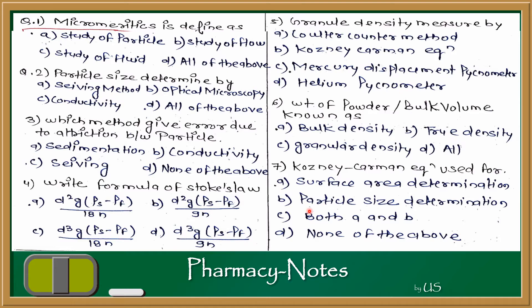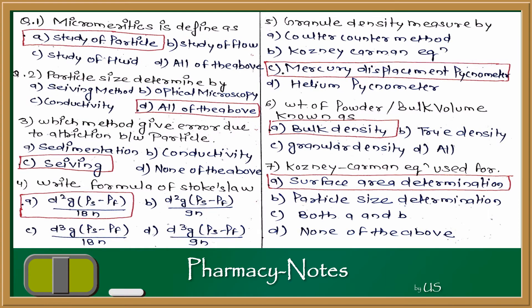Question 7: The Kozeny-Carman equation is commonly used for? Options include surface area determination, particle area determination, both A and B, and none of the above. The answer is A — surface area determination method. Summary: Micromartics is the study of particles; all listed methods determine particle size; sieving causes attrition error; Stokes' law formula is d²g(ρs−ρf)/18η; mercury displacement measures granule density; bulk density is mass upon volume.